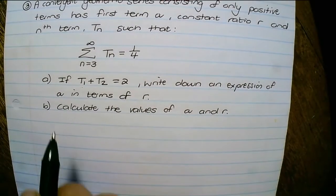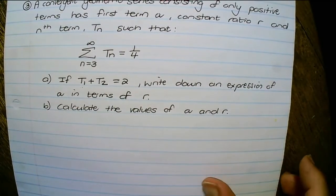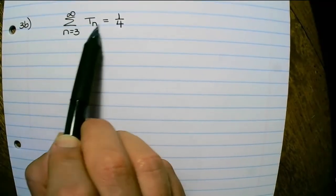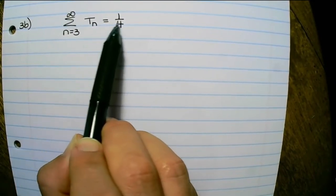And in the next question, we have to calculate the values of a and r. So first off, we are given that the sigma notation from term three to infinity equals a quarter.